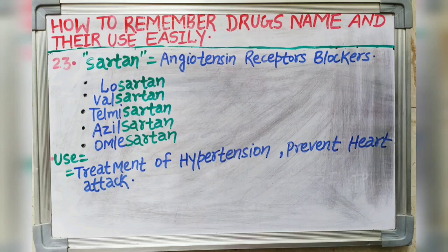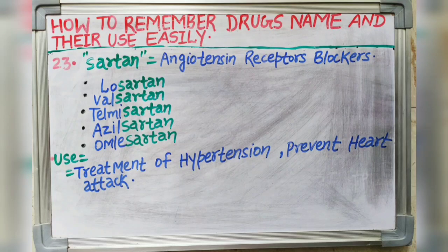Next suffix is -sartan. Sartan indicates angiotensin receptor blockers. Drugs like losartan, valsartan, telmisartan, azilsartan and olmesartan all end with the -sartan suffix. It is used in treatment of hypertension and also prevents heart attack or stroke.